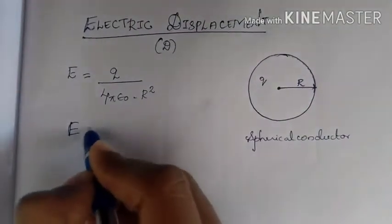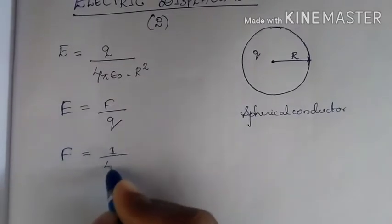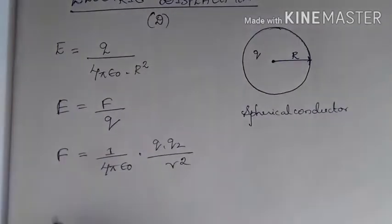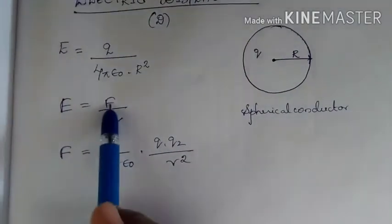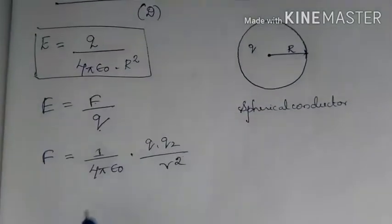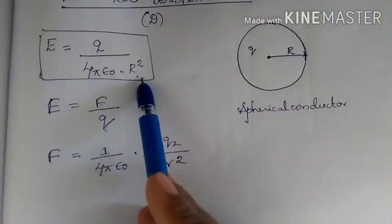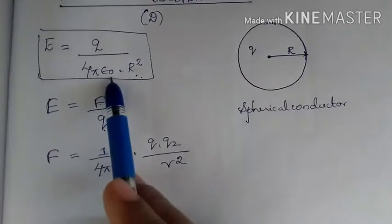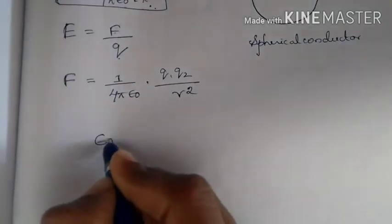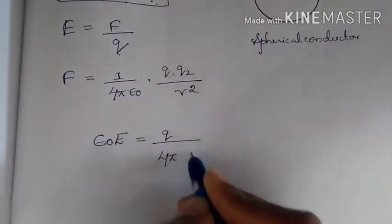Why? Because E equals force divided by Q. From Coulomb's law, force equals 1 divided by 4π epsilon naught, multiplied by Q1 Q2 divided by R squared. So if you divide force by Q, you get the electric field: E equals Q divided by 4π epsilon naught R squared. Now if you take epsilon naught to the left-hand side, epsilon naught multiplied by E equals Q divided by 4π R squared.